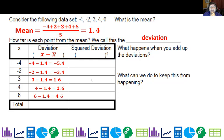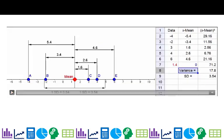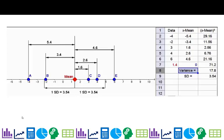What happens when you add up all the deviations? They add up to 0. Is this always the case?